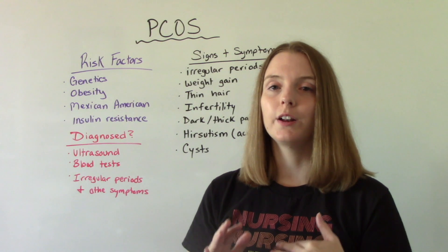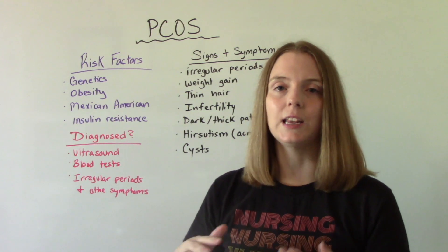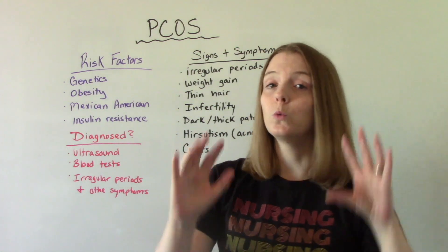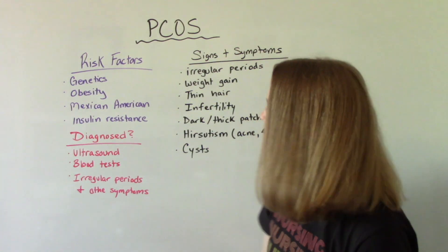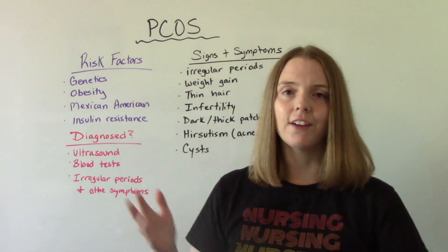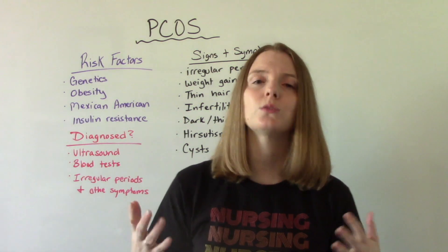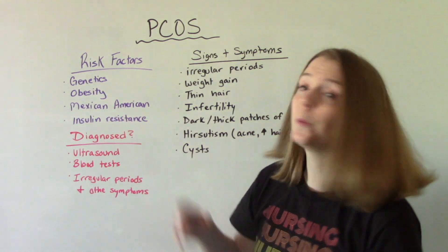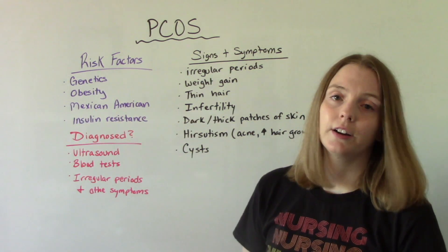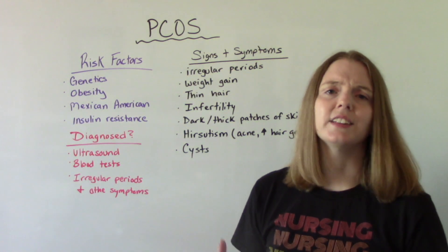PCOS is one of the most common endocrine disorders seen in women of childbearing age. Risk factors include genetics — you're more likely to have this if your mom or sister has it. Other risk factors include obesity, being Mexican American, and already having insulin resistance.